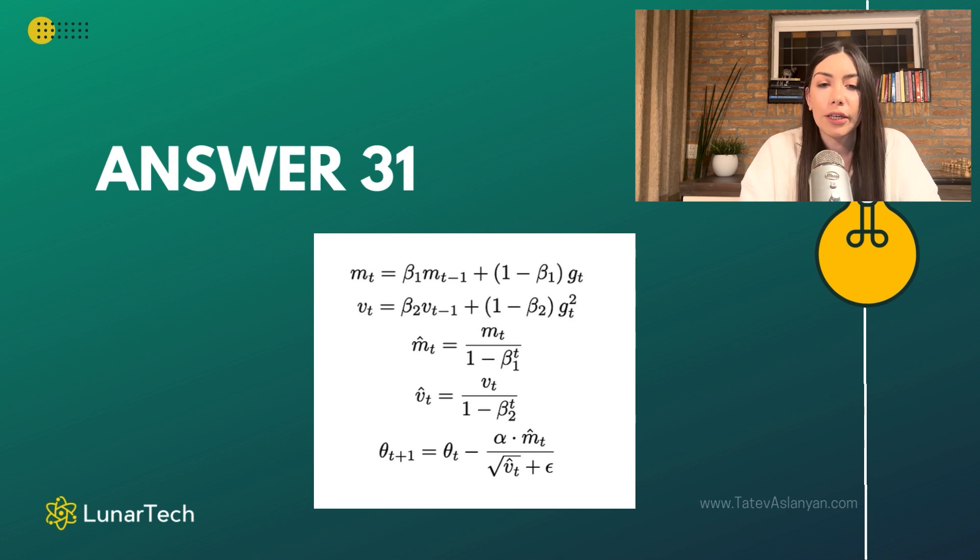When we look in here, we can see that the first one is the momentum term. The MT is equal to beta 1 times MT minus 1 plus 1 minus beta 1 times GT, where beta 1 is the first parameter, a constant, and beta 2 is also a constant hyperparameter, both of which we can actually tune.